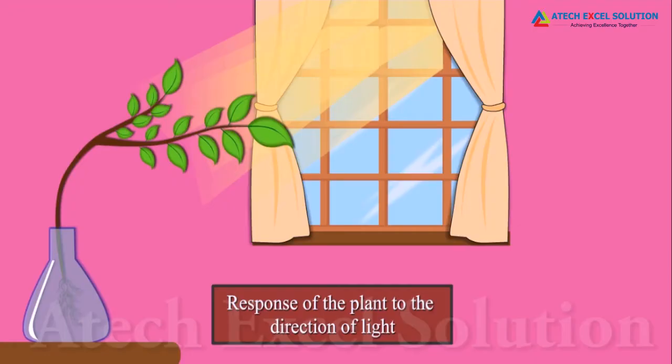When the plant bends towards light, this growth is directional and is dependent on growth. Photo means light. Hence, we can say that shoots show positive phototropism while roots show negative phototropism.